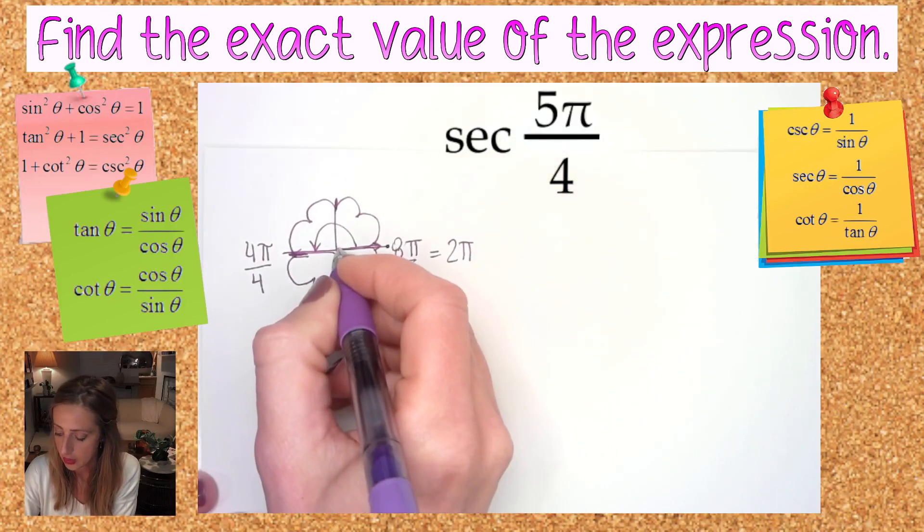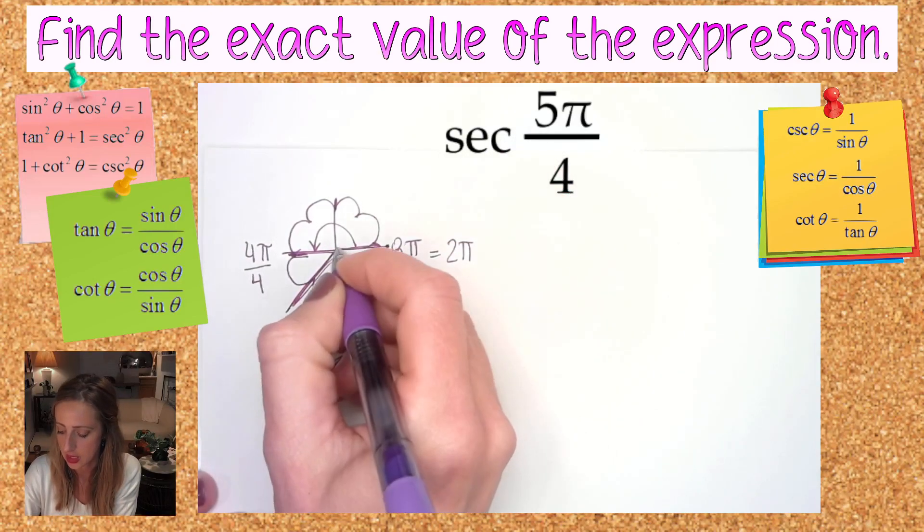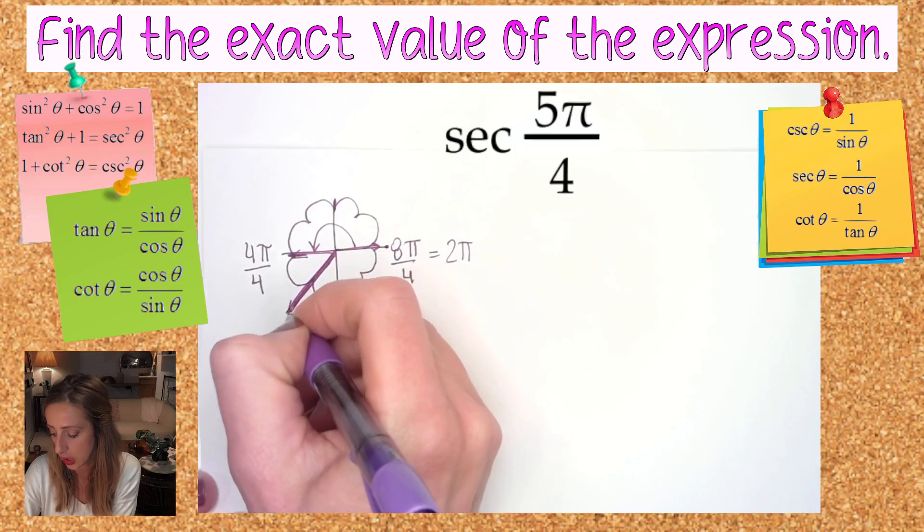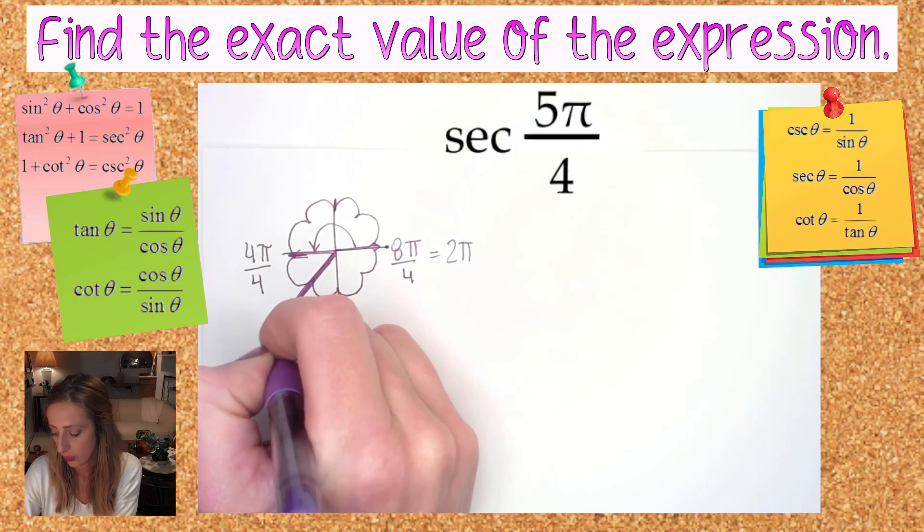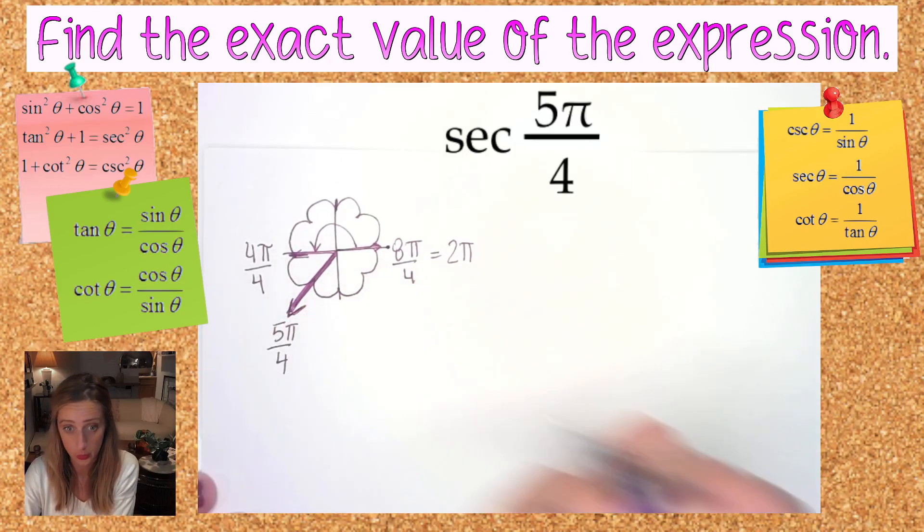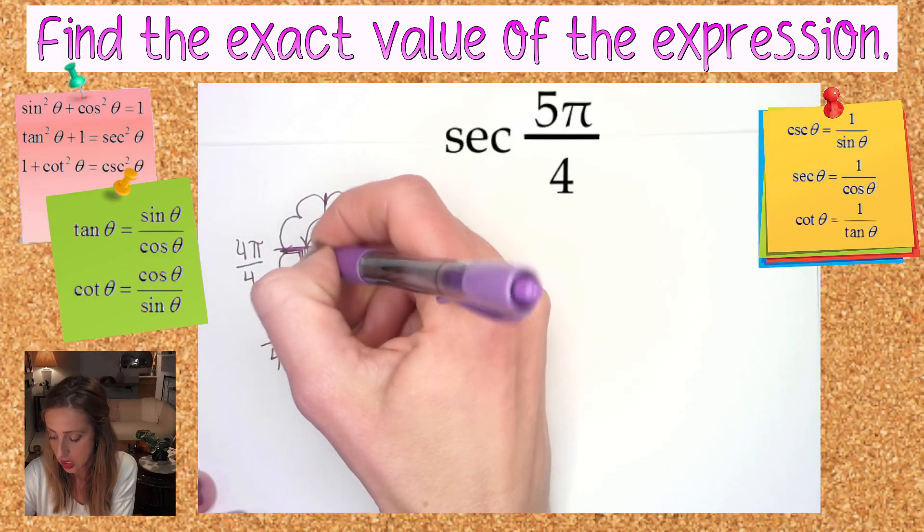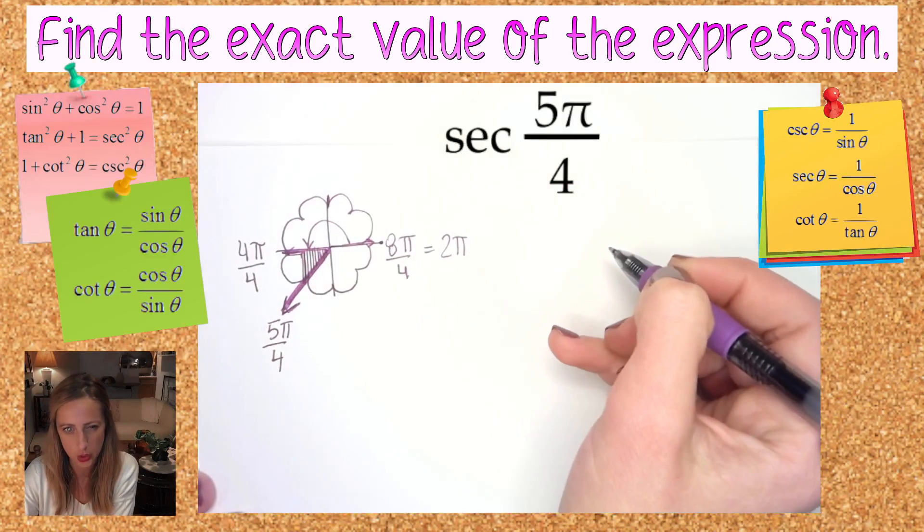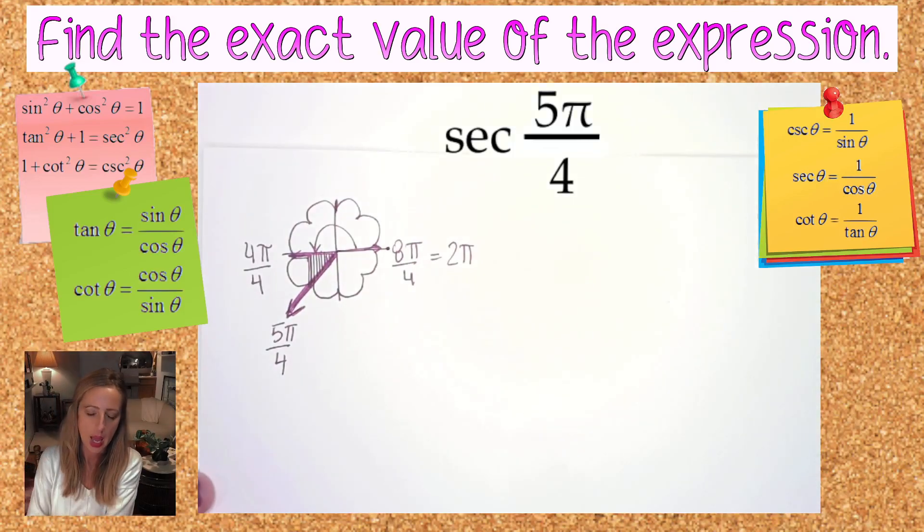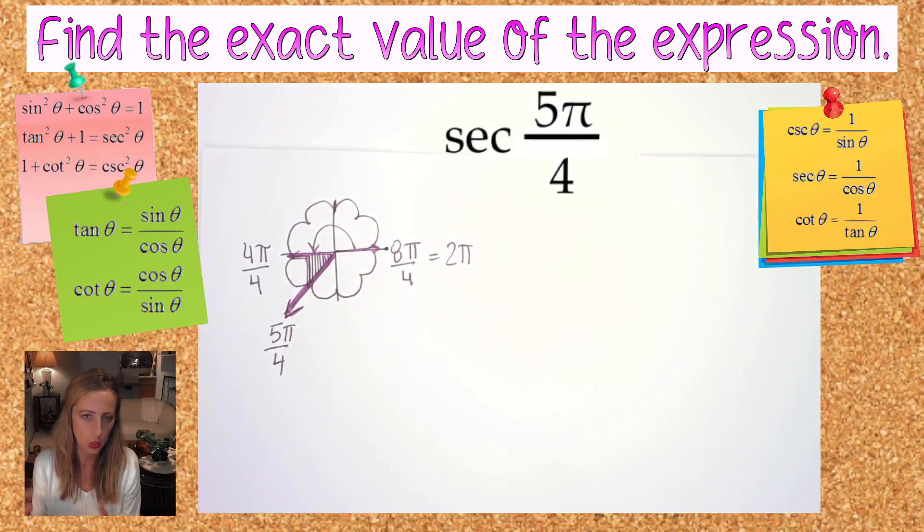So if this is 4π over 4 and I'm looking for 5π over 4, then I am really interested in this angle right over here. Next thing we need to do now that we know where that angle is, is we want to envision the reference triangle which is always going to connect to the closest x-axis.